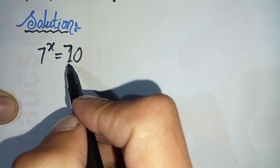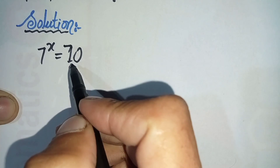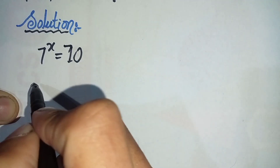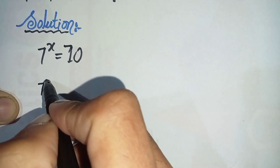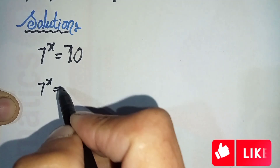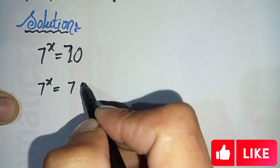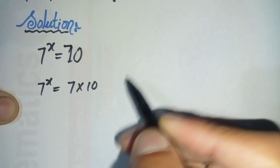In the next step we will split and factorize 70 as 7 times 10. So this equation will become 7 raised to the power x is equal to 7 times 10, which is 70.